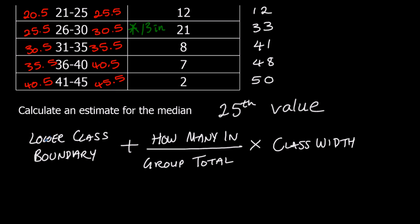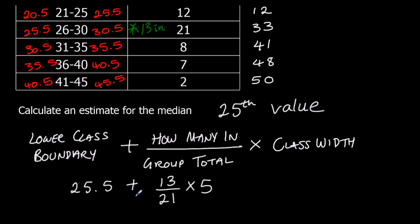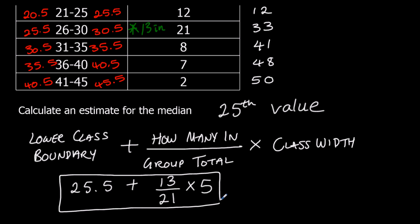So the lower class boundary is 25.5, plus 13 into the group out of 21 — that's the fraction we're going in — times 5. We can type this into the calculator and it will give us our estimate for the median. To 3 significant figures, we get 28.6 miles per hour.